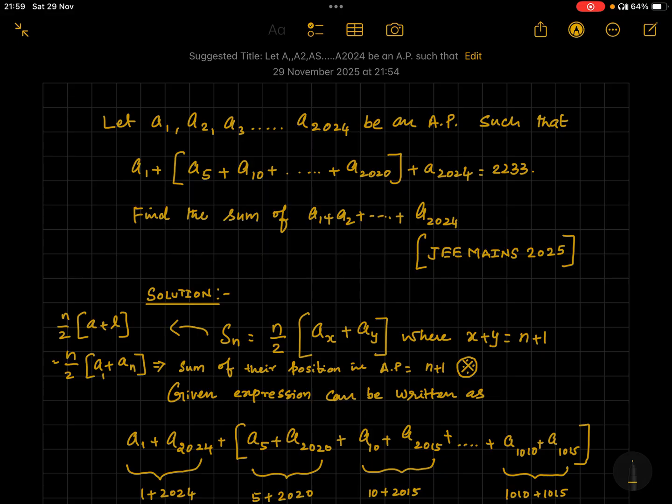The data given is a1 plus certain terms within the parenthesis plus a2024, and that sums up to 2233. So what formula can we use here?